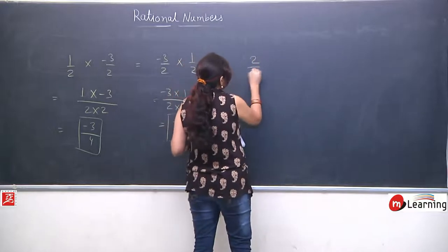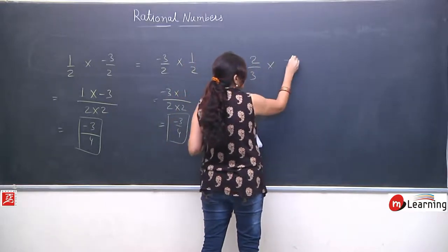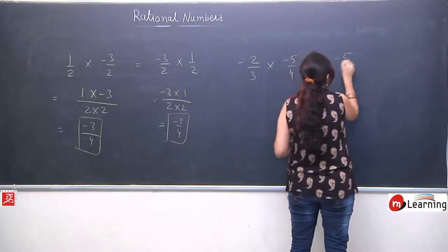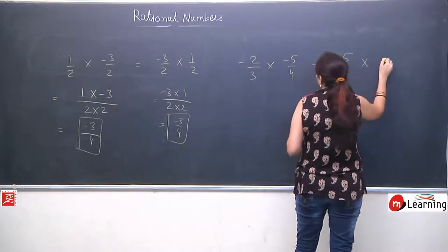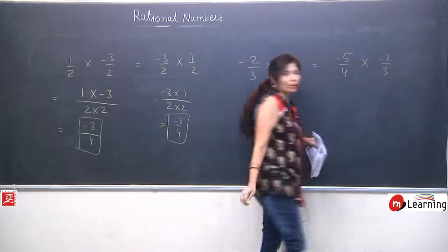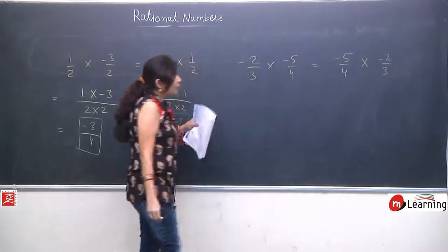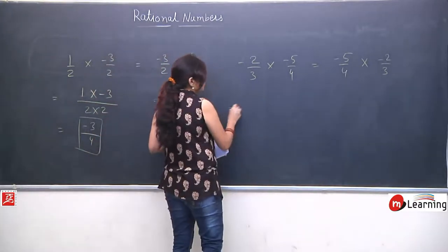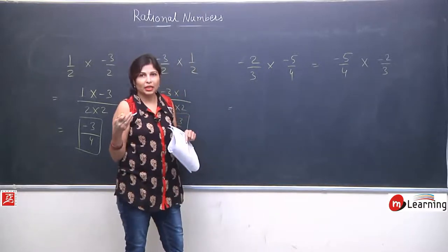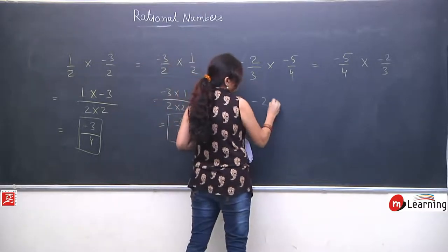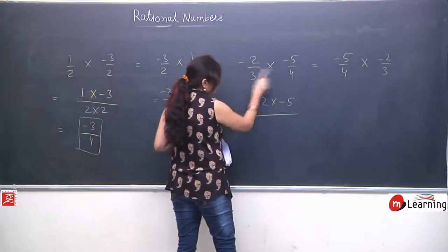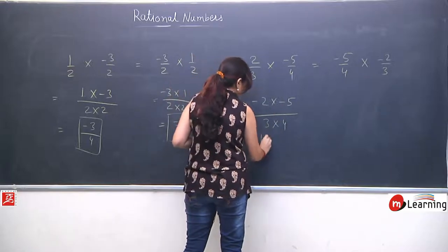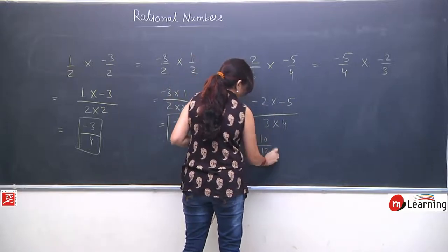Ek aur example lete hain jis se aapko koi confusion na rahe — hum dono hi negative lete hain. Commutative lagayenge, means hum terms ko exchange karenge: a into b ki jagah b into a karte hain, but we should have equal answers. Yahan numerator will multiply to the numerator — minus 2 and minus 5 will give you 10 upon 12.